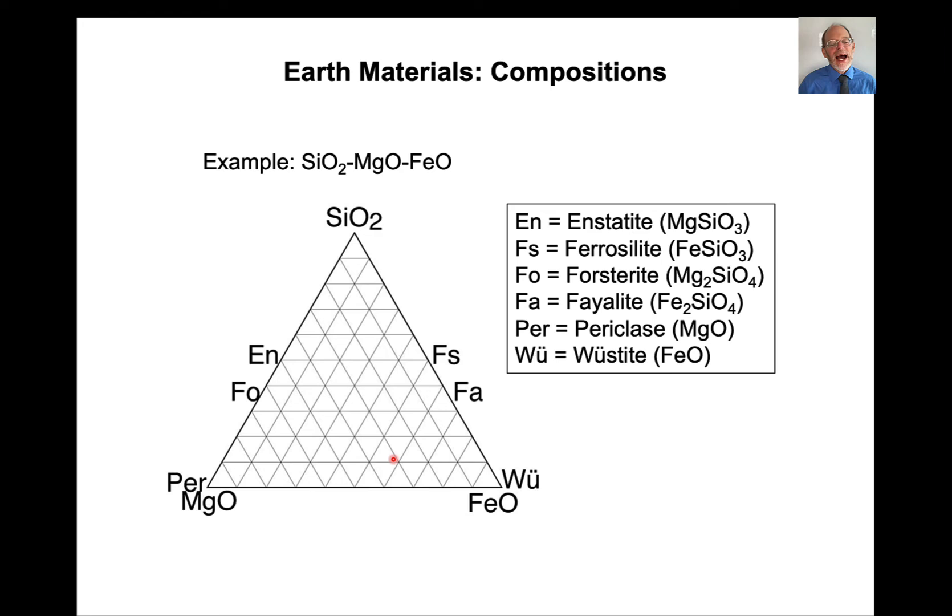FeO on one corner, MgO on another corner, SiO2 on another corner. I've rotated this around, but here's the basic idea. SiO2, MgO, FeO, and here's where these different materials plot. Periclase, MgO, wustite, FeO. A mixture of 50% FeO and 50% SiO2 is ferrosilite, FeSiO3. 50-50 makes enstatite. Two-thirds MgO, one-third SiO2 makes forsterite. Two-thirds FeO, one-third SiO2 makes fayalite. And any composition in here would make the mineral olivine.